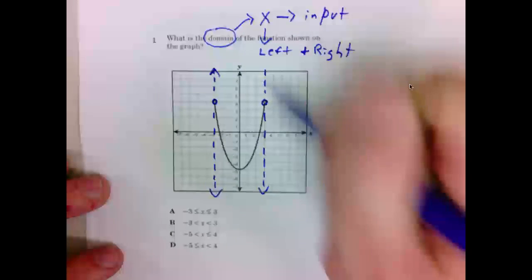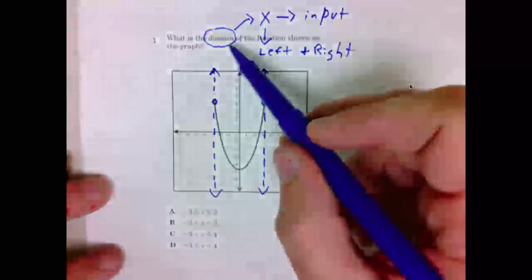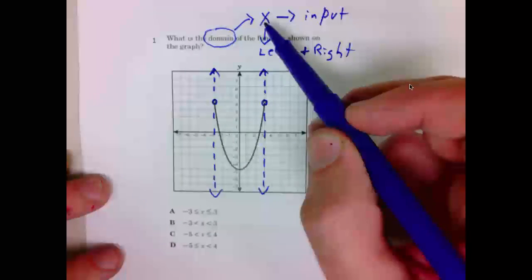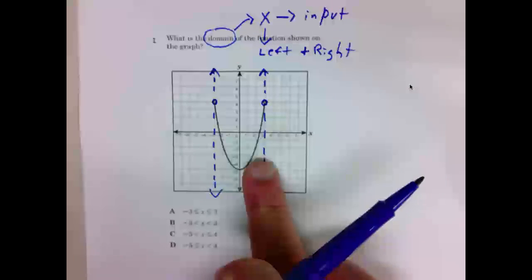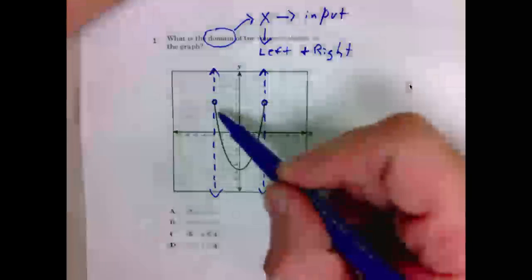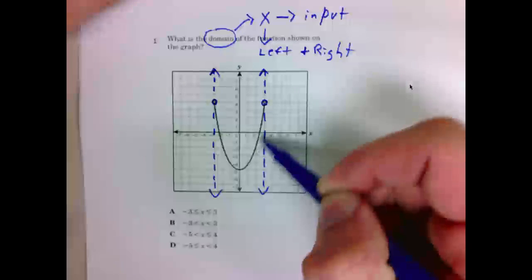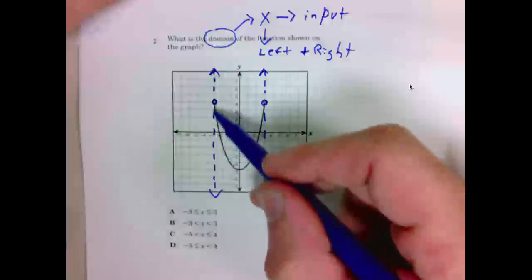Why am I drawing a vertical line? Well, we're seeking the domain. Domain is X. And the X's are left and right. So I want to know how far to the left and the right does the graph go. I want to know, on this curve, what are the possible X values?